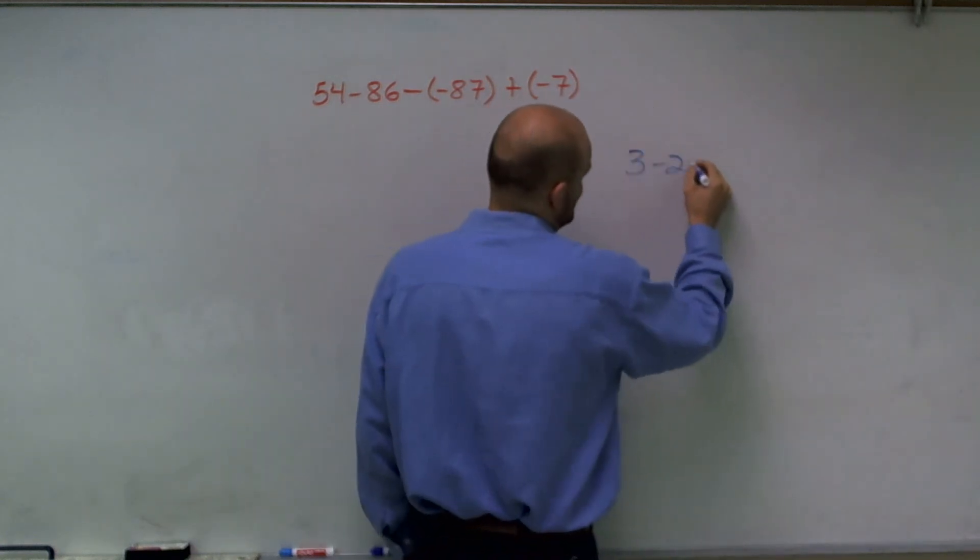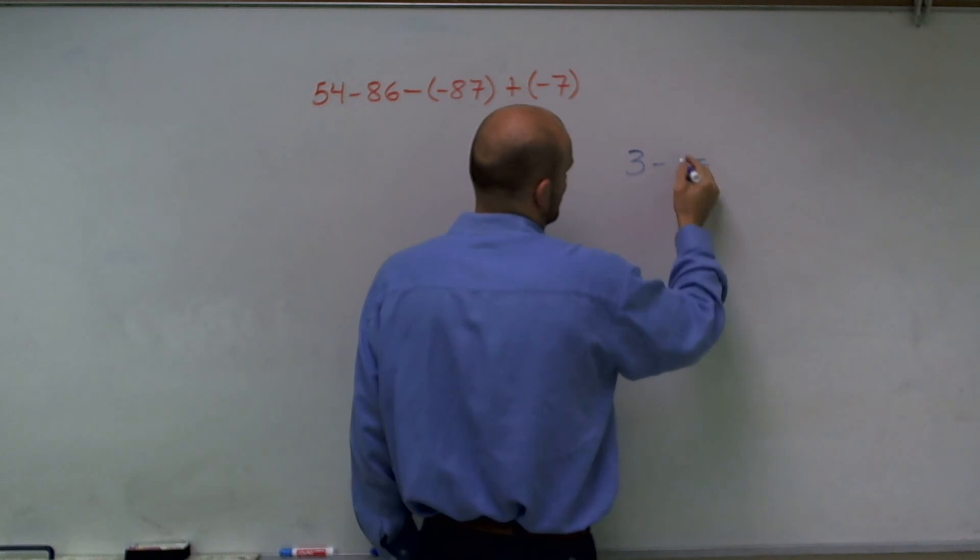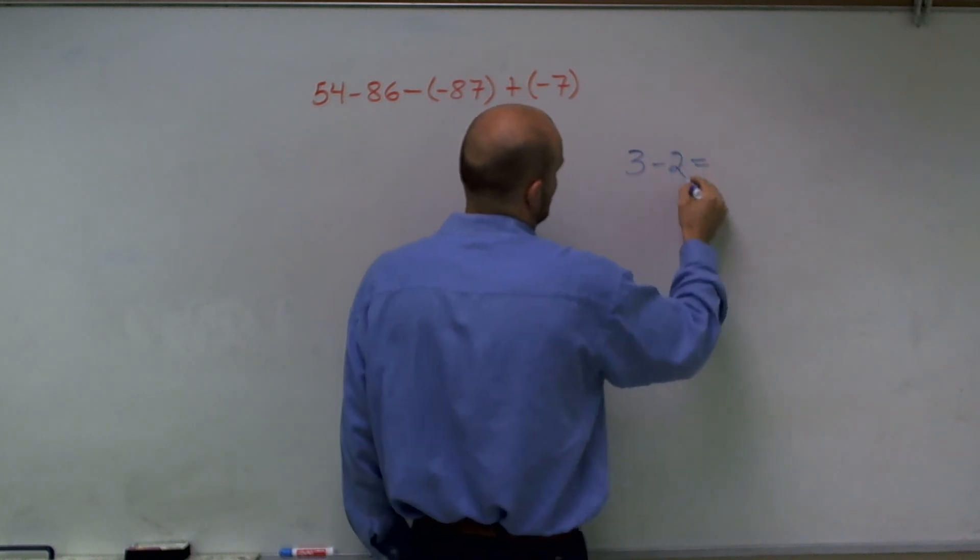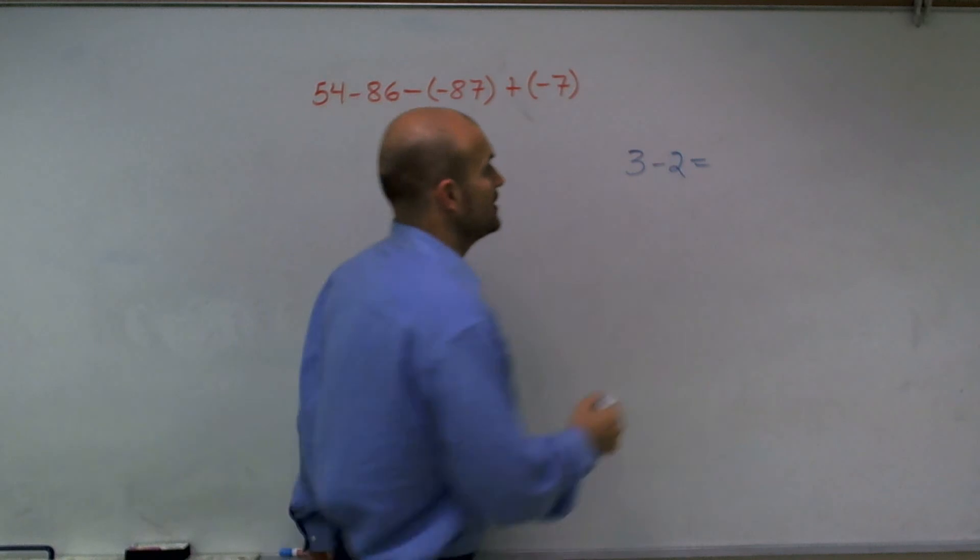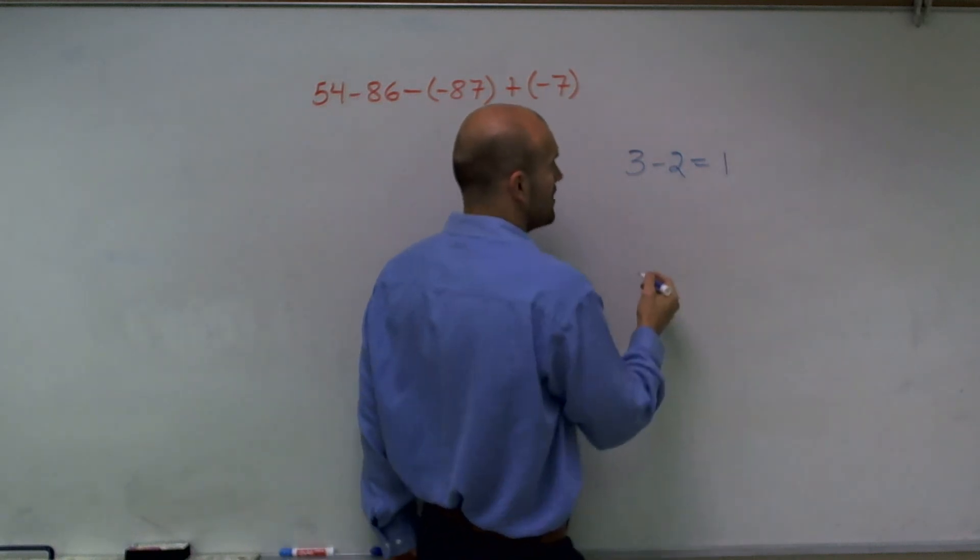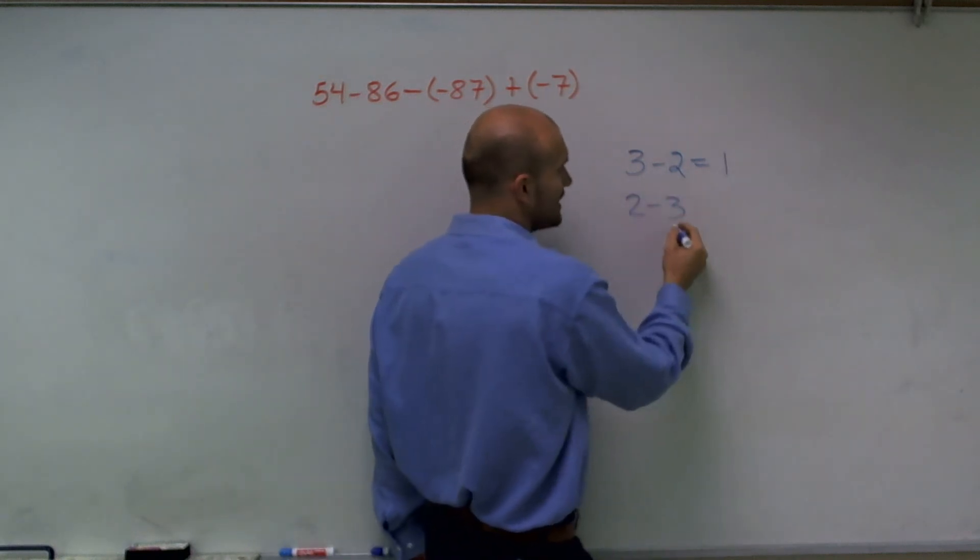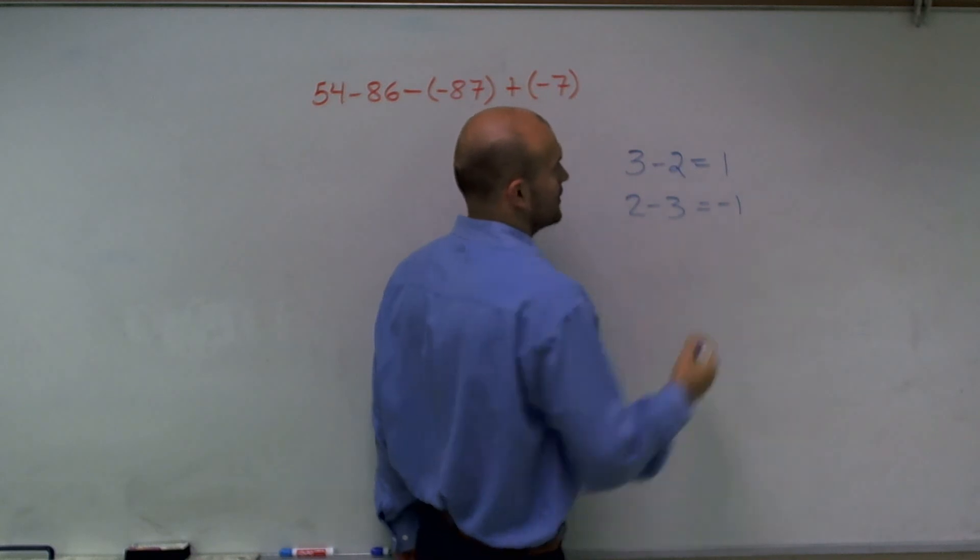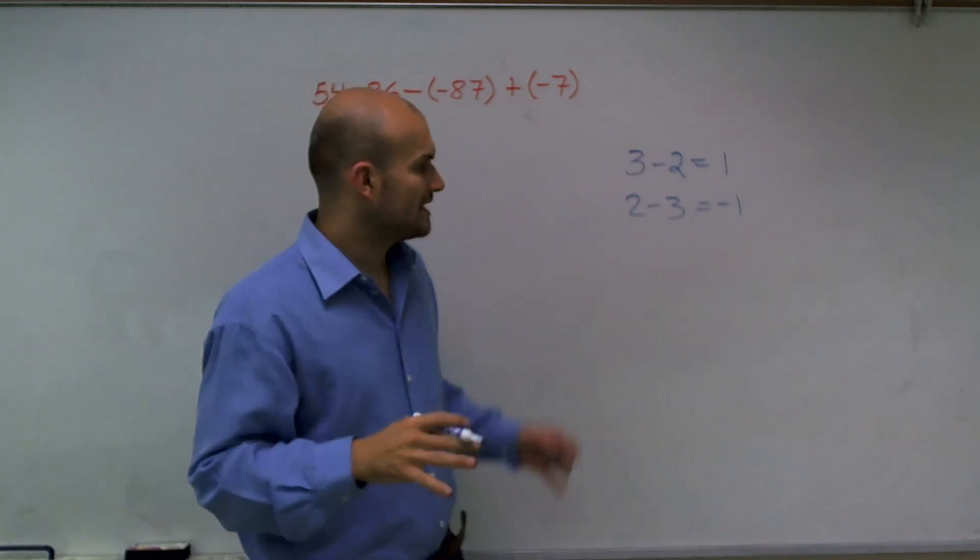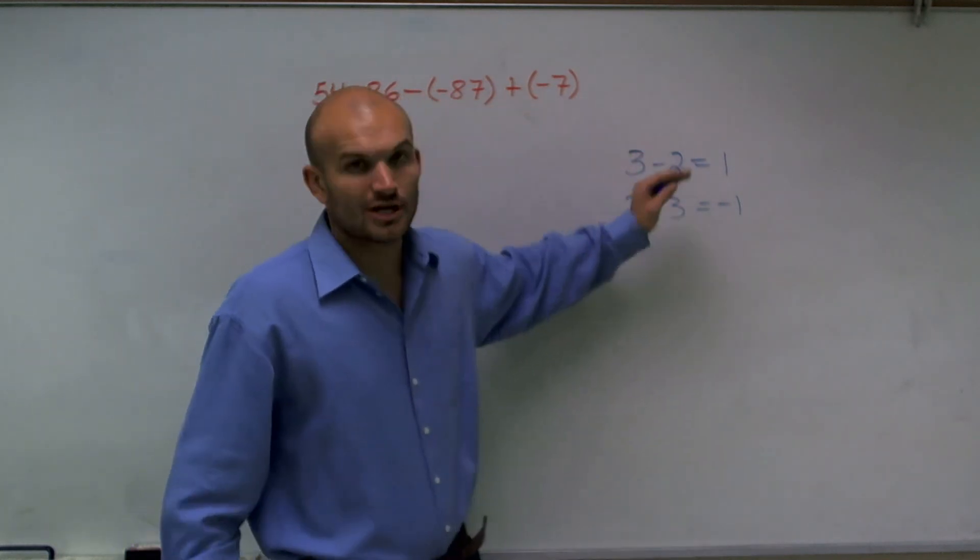3 minus 2... let's pick a different one. Yeah, that's fine. 3 minus 2 is equal to 1. However, if you did 2 minus 3, well, that's equal to negative 1. So we've got to be very careful. Those answers are not the same.